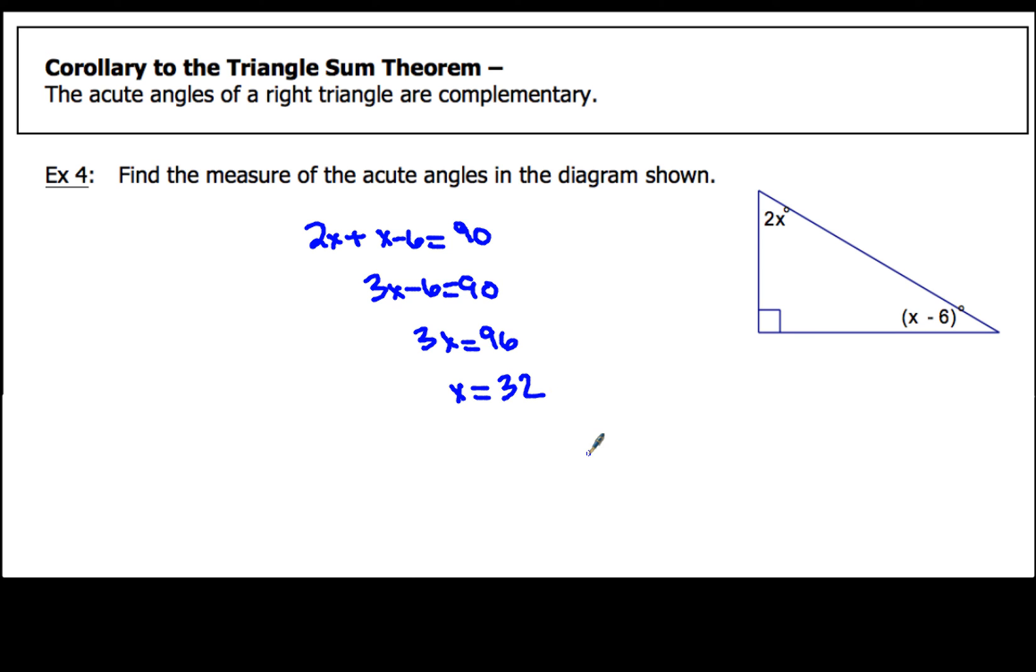Now my question says find the measure of the acute angles in the diagram shown. So I've got to find the measure of the 2x angle and the x minus 6. So to find each of the acute angles, all we're going to do is just plug in x. So 2 times 32, that's going to give us a grand total of 64. And then the x minus 6 angle, when I go ahead and do 32 minus 6, I end up with 26. Now here's what I want to do. I want to double check. Make sure that those add up to 90. So if I do that, the sum of the two angles is 90. So that means I did my arithmetic correctly. And that's it.